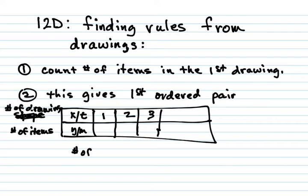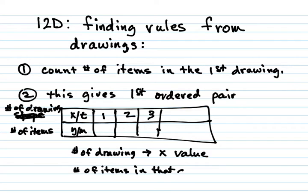So those give you your things. So the number of the drawing is your X value, and the number of items in that drawing is your Y value. And again, I always call them X and Ys. That's the generic terms. But if you have specific items, they'll label them different letters depending on the items. You should always name them according to the items if that's possible, unless they ask you to use specific letters.